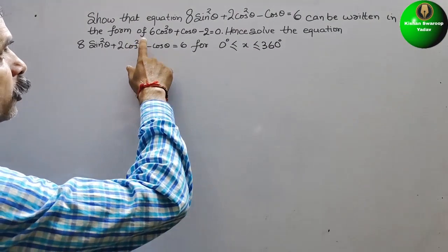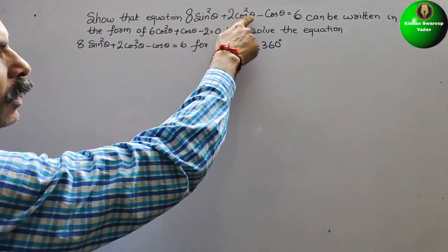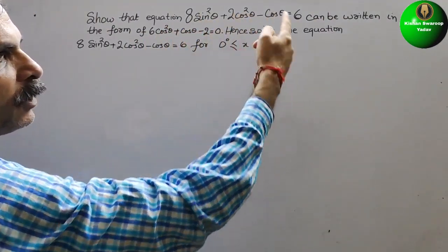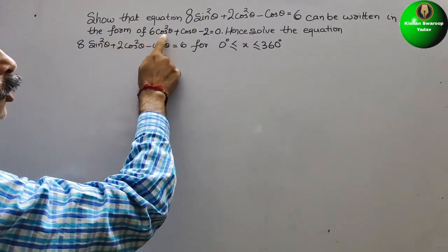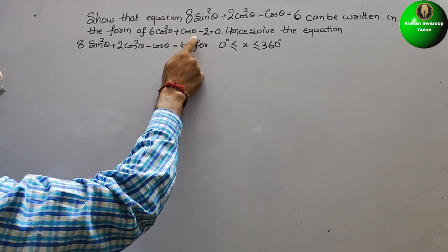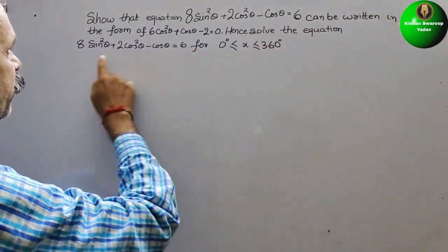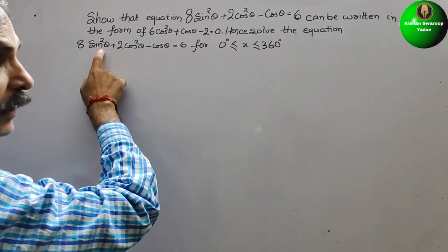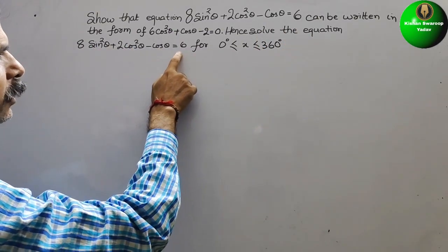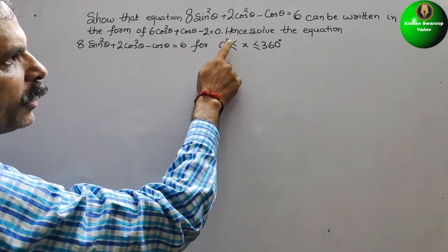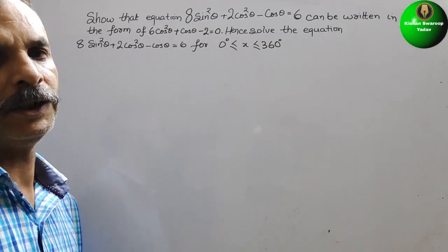The question asks to show that the equation 8sin²θ + 2cos²θ - cosθ = 6 can be written in the form 6cos²θ + cosθ - 2 = 0. Hence, solve the equation 8sin²θ + 2cos²θ - cosθ = 6 for 0° ≤ x ≤ 360°.